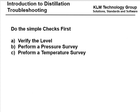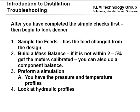Do the simple checks first: verify the levels, perform a pressure survey, perform a temperature survey. If you don't find any problems, look a little deeper. Sample the feeds — has the feed changed from the design? It could be that the new feed can no longer be processed in your existing equipment. Build a mass balance; if it's not within two to five percent, get the meters calibrated. You can also do a component balance — a standard orifice plate has only two percent accuracy, so two to five percent can be a challenge. Then perform a simulation using your pressure and temperature profiles and mass balance to look at the hydraulic profiles and assess whether the trays or packing are designed for your new conditions.